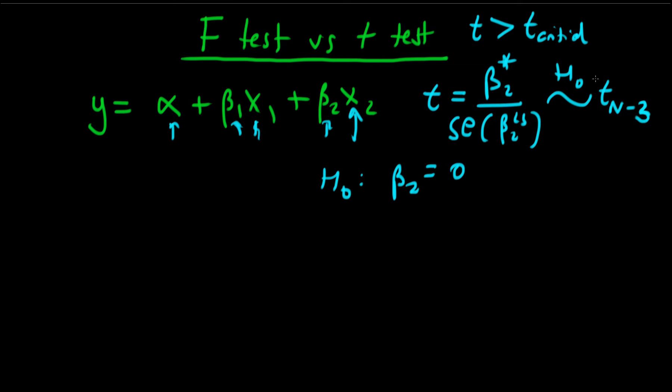But there is another way we could have tested for significance of x2, and that is by running an auxiliary regression, so y equals alpha plus beta 1 times x1. Notice that this is a restriction of the first model. In this second model, we have actually assumed that beta 2 equals 0.